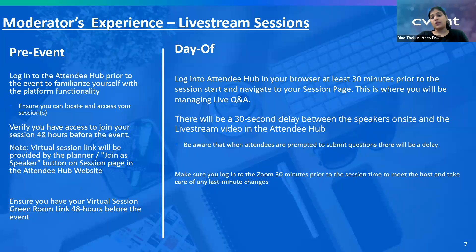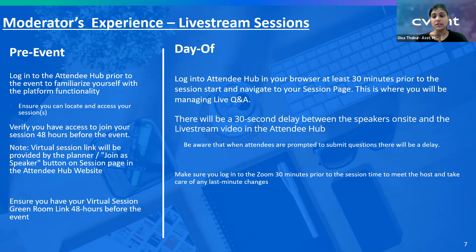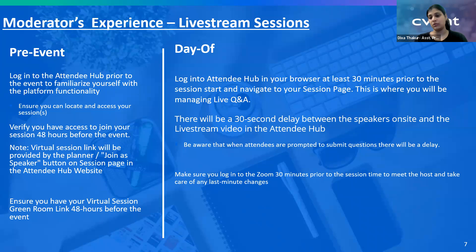On the day of the event, we'd like you to log into your Attendee Hub 30 minutes before your session start time. Once you log into the Attendee Hub using your credentials, it keeps you logged in for 24 hours — it refreshes after 24 hours, meaning you have to re-enter your credentials after that. So even if you close the window and it's within 24 hours, once you click on the Attendee Hub link, it will directly log you in.